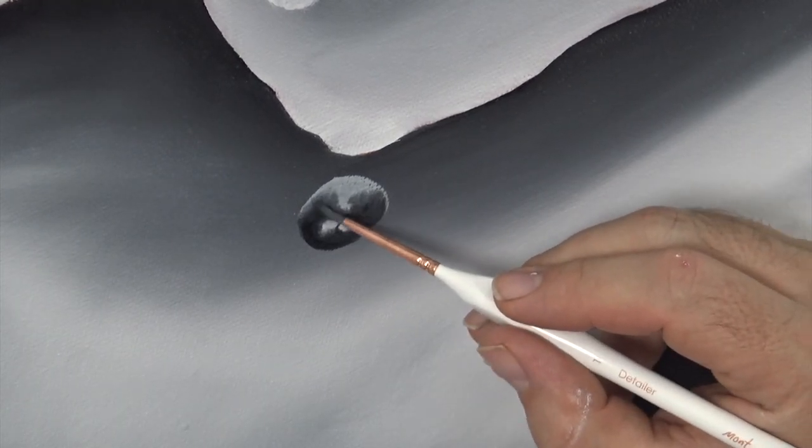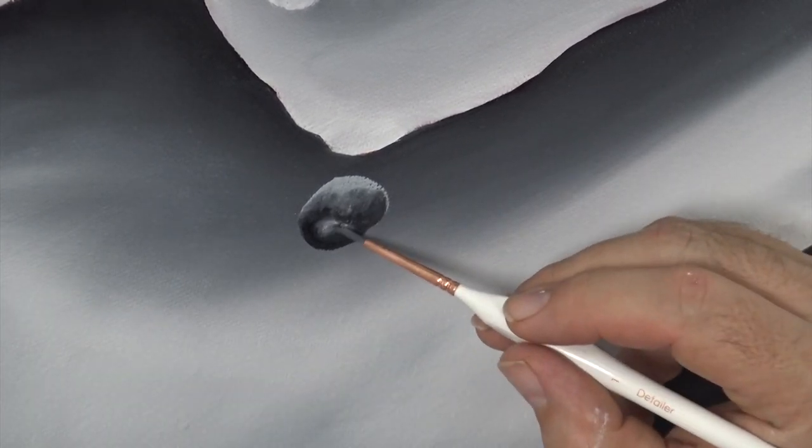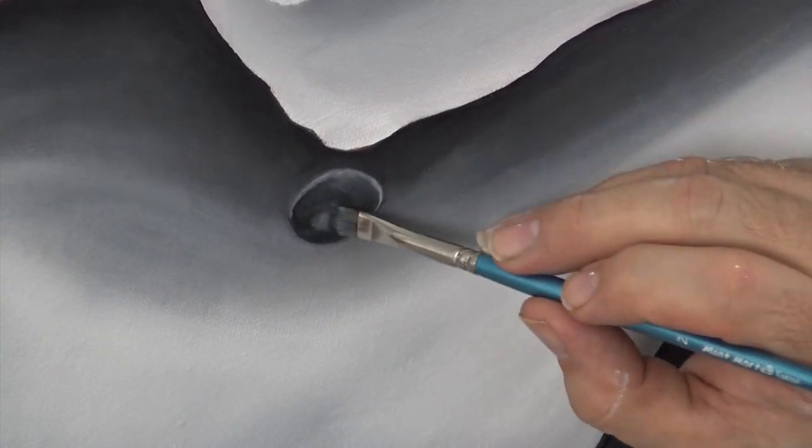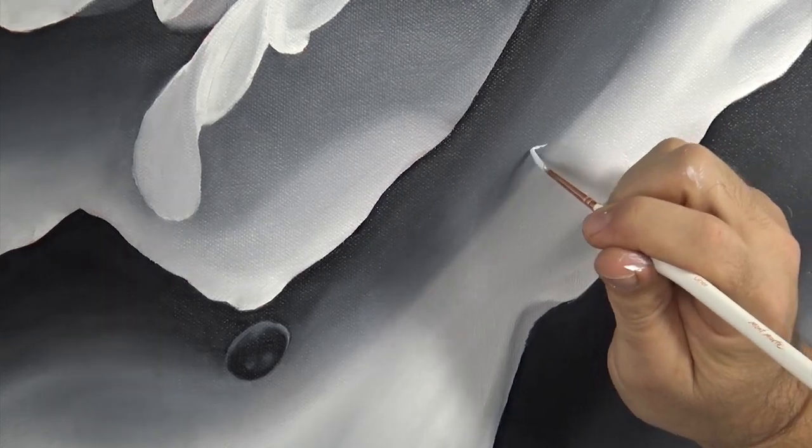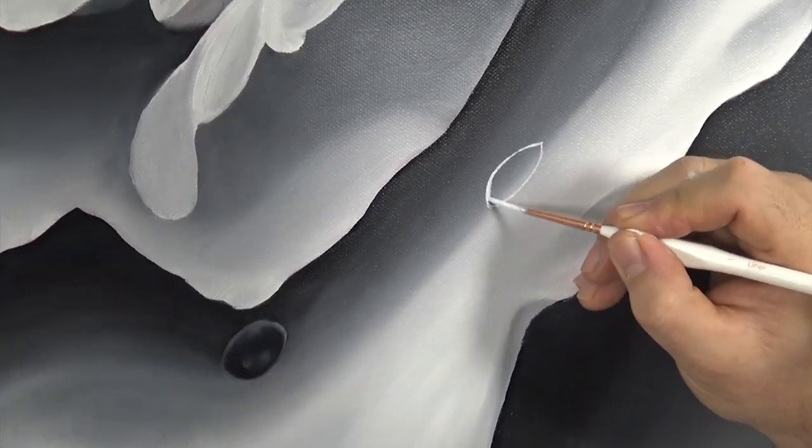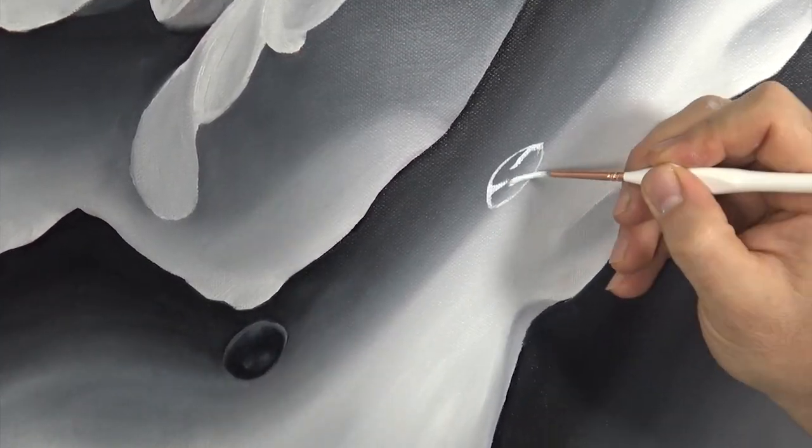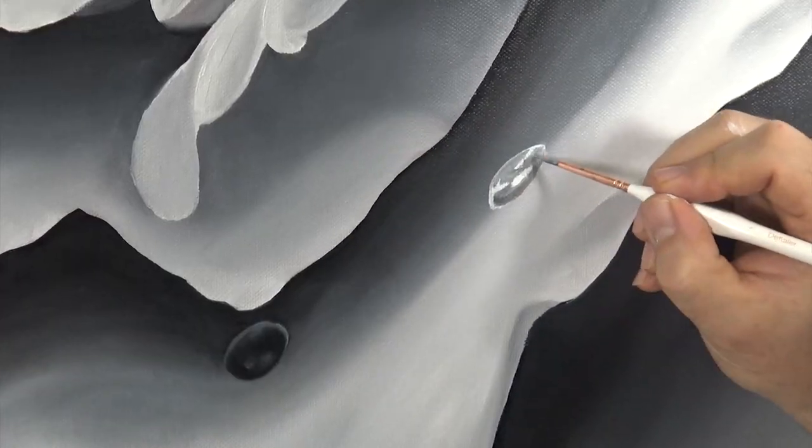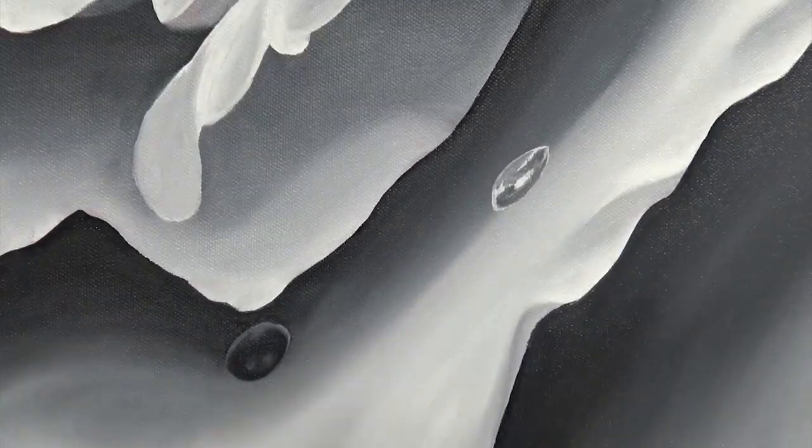The tricky thing about macro painting is a lot of the elements like these droplets don't look like they are supposed to when you are so close to the canvas painting them. This rose is depicted about 20 times larger than a real rose, so again you have to stand back and observe what changes need to be made and then add in the information.